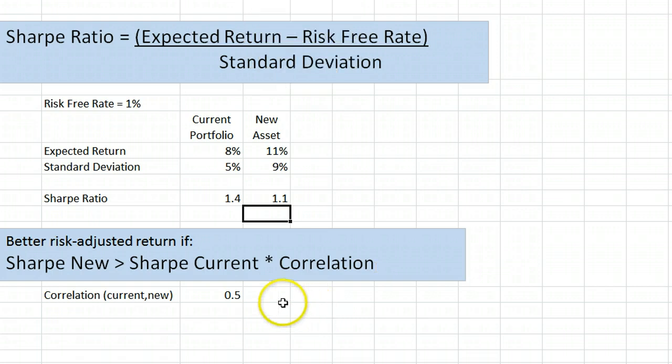For example, if our new asset moves somewhat differently from our current portfolio, so that the correlation between them is only 0.5, then this new asset will give a higher expected risk-adjusted return, since 1.1 is more than 1.4 times 0.5.